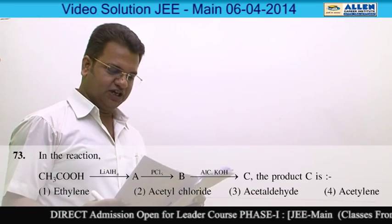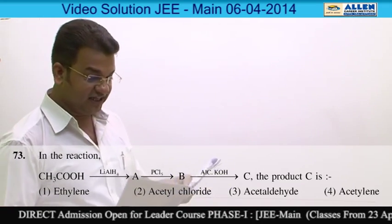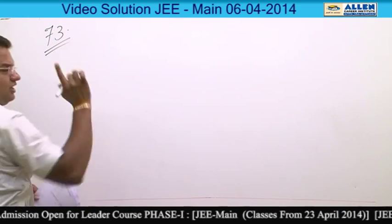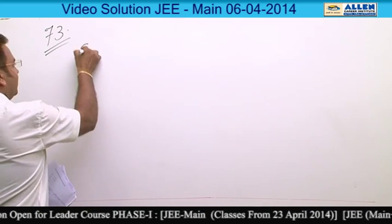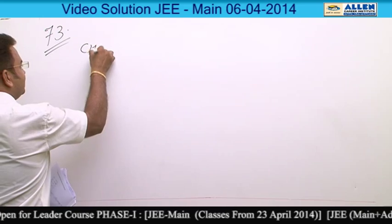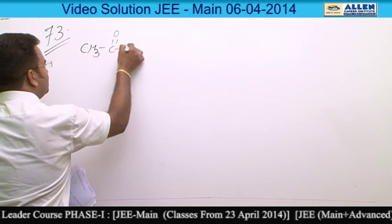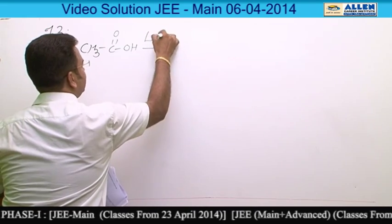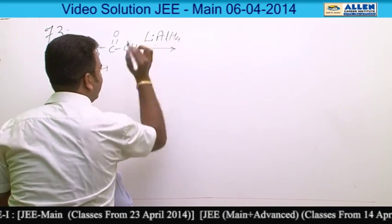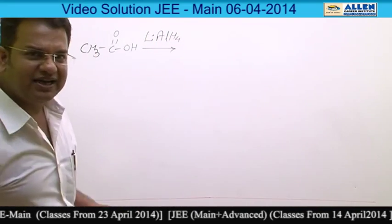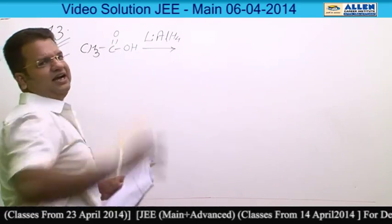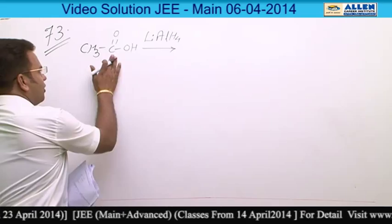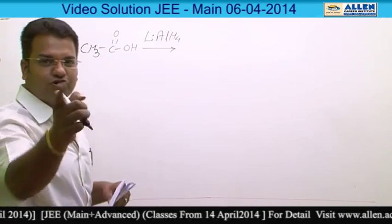Initially, CH3COOH is treated with lithium aluminum hydride. Lithium aluminum hydride is a reducing agent which reduces the carboxylic group into an alcohol.